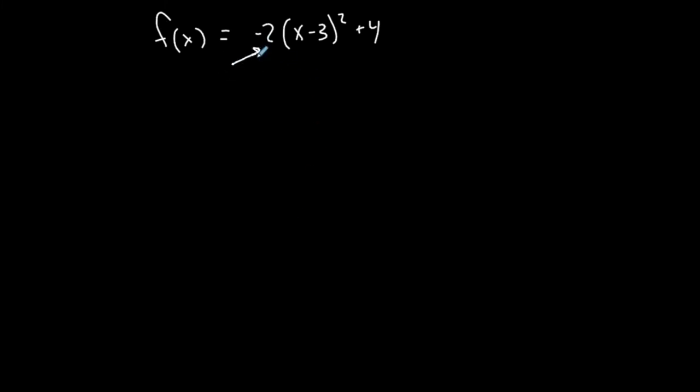First and foremost, my leading coefficient, this is my A. A is less than zero because it's negative. That means that my parabola is going to open down, which means that my vertex, whatever it might be, is a maximum. It's a high point on the graph.